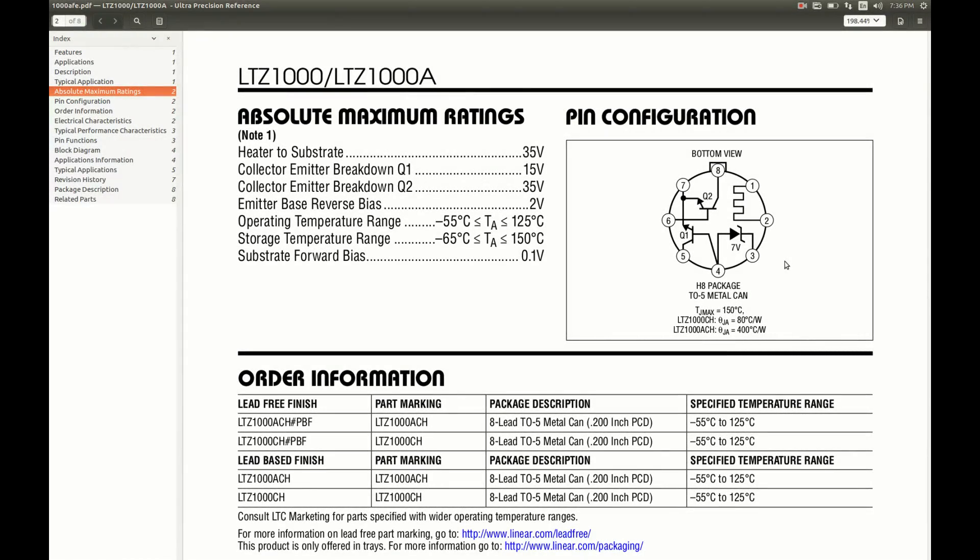Here is what's inside of the chip. The critical parts are this so-called buried Zener diode and a heater to maintain a precise temperature right inside of the metal can.